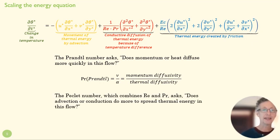Then when we think about the Reynolds number times the Prandtl number, we call that the Peclet number. Just to throw in, because who wants to say Reynolds and Prandtl? So we just say Peclet. And that's asking us in a similar vein, does advection or conduction do more to spread thermal energy in this flow?